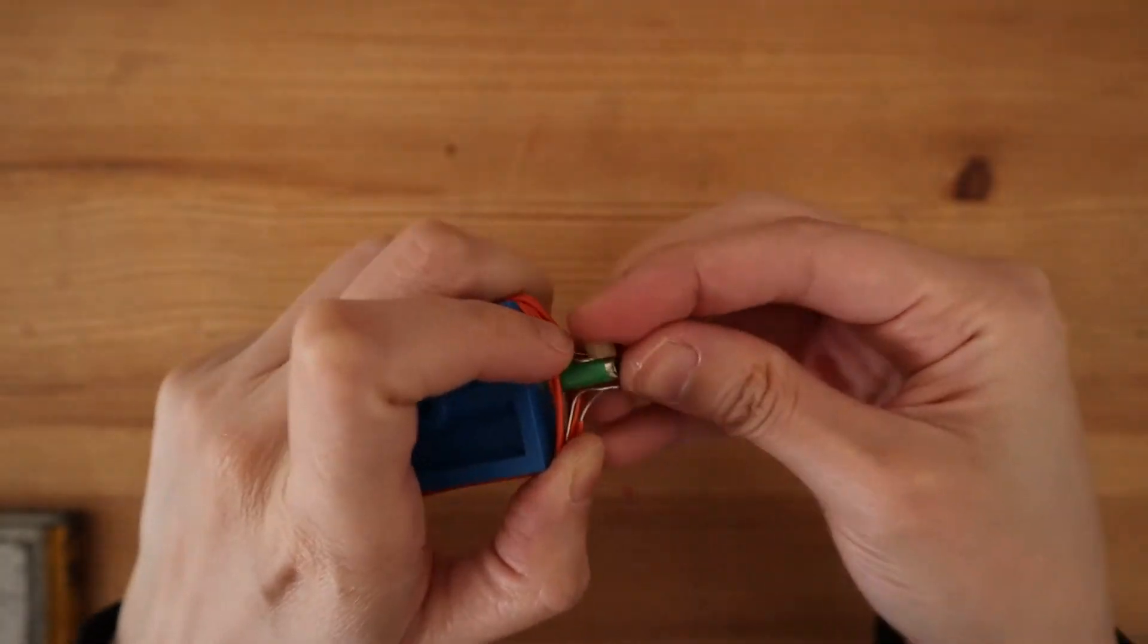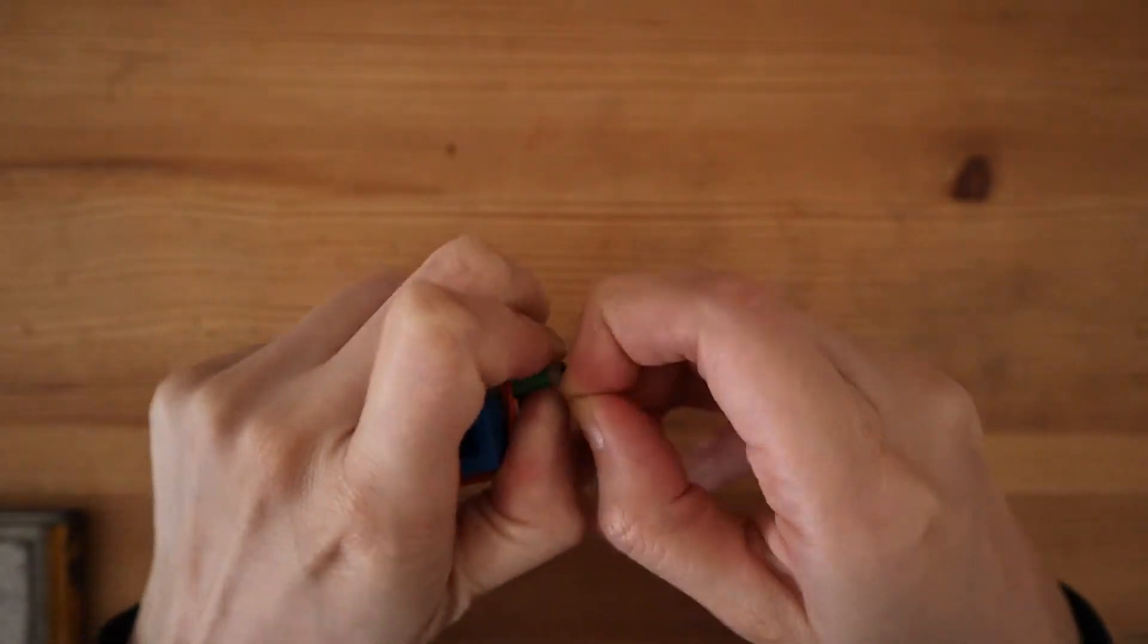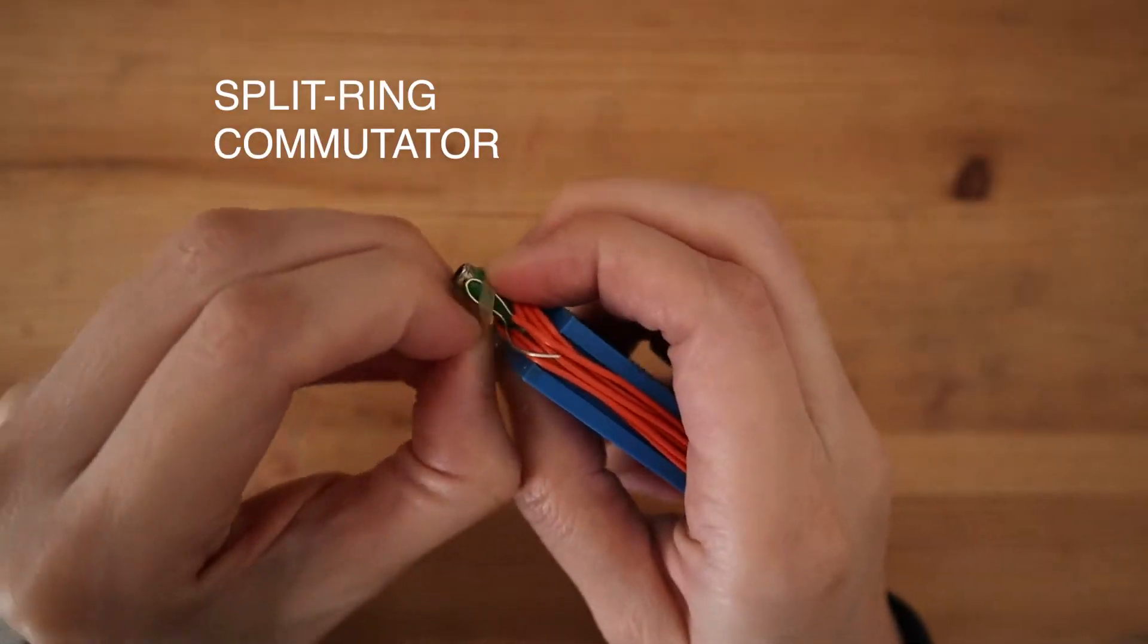Stretch the rubber band over the wire. The two loops are now the motor's split ring commutator.